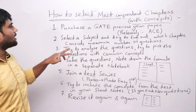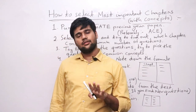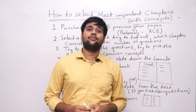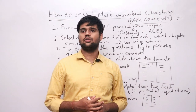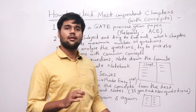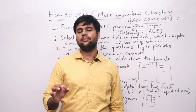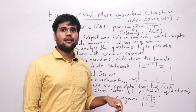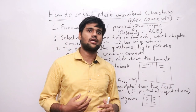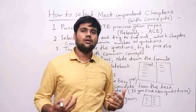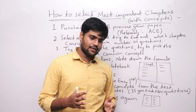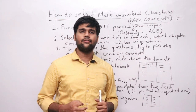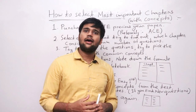The first step is to purchase a GATE previous year paper. If you don't have one, please purchase it — most preferably from ACE Institute. If you join a coaching, they will also provide it. If you are self-preparing, you must purchase the GATE previous year paper. Once you have it, select a chapter to start with — for example, Strength of Materials — and check how many questions are being asked and which chapter has the maximum number of questions.